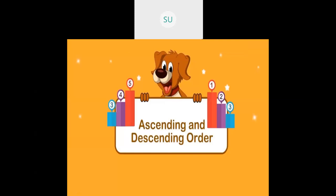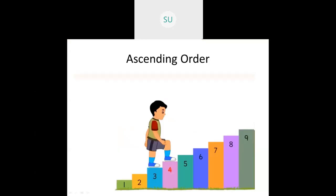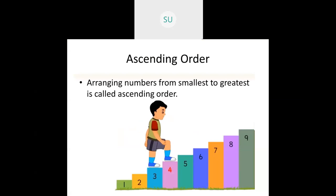So this was between, after and before. Now let's see ascending and descending order. Here this boy is climbing up stairs — he will climb 1, then 2, then 3, 4, 5, 6, 7, 8 and 9. He is going from the lower step to the higher step, from 1 to 9, and the numbers are increasing. Arranging numbers from the smallest to greatest is called ascending order — the smallest is 1 and the greatest is 9.